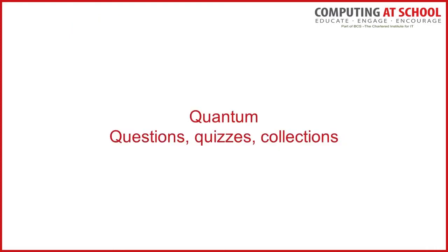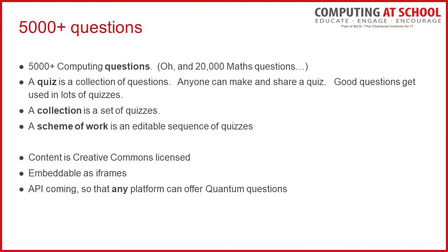That takes us to the Quantum platform. We have a three-level structure: individual questions, grouped into playlists or quizzes, then quizzes collected into collections. We already have over 5,000 questions for computing and more than 20,000 for maths on the Diagnostic Questions site. We're already seeing a discovery problem with 5,000 questions — how do you know which are the good ones? Teachers are curating individual questions into quizzes so they can give students five or ten questions on the same topic, or as a revision test. The good questions tend to get included in more quizzes than the bad ones, providing a measure of quality as judged by teachers.